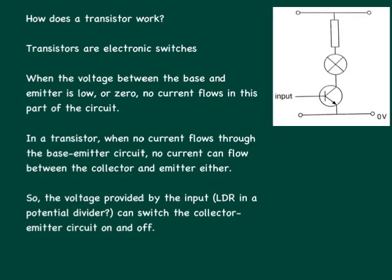So just to summarize, transistors are electronic switches. When the voltage between the base and the emitter is low or zero, no current flows in that part of the circuit. In a transistor, when no current flows through the base-emitter circuit, then no current can flow between the collector and emitter either. So the voltage provided by the input, which could be an LDR in a potential divider, can switch the collector-emitter circuit on and off.